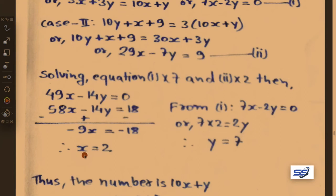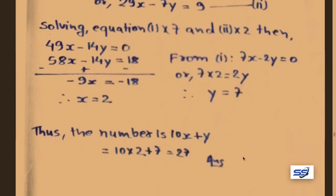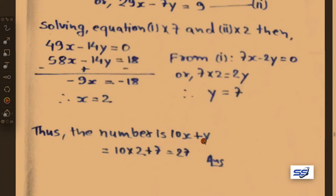Value of x is 2 and value of y is 7. The required two-digit number is 10x plus y equals 10 into 2 plus 7 equals 20 plus 7 equals 27. So 27 is our required two-digit number.